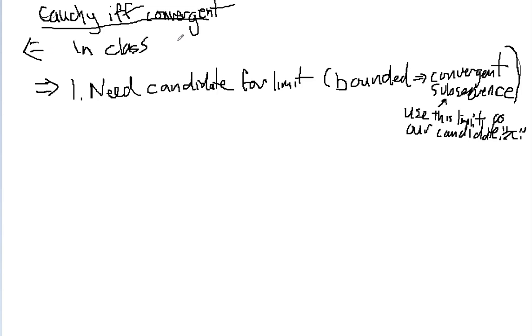For Cauchy implies convergent, though, we have a little problem, because for something to be convergent, we need to know the limit. So we need to figure out a candidate for the limit.